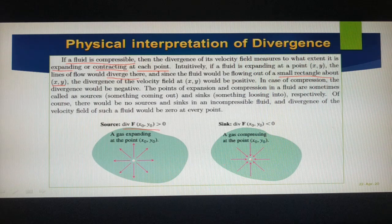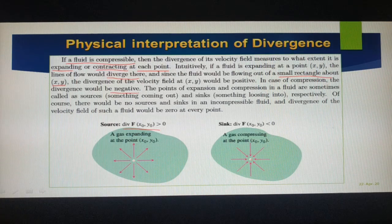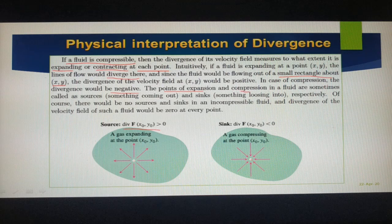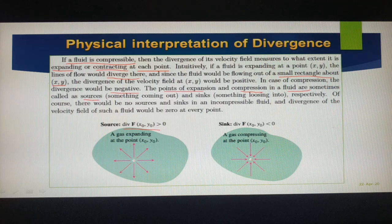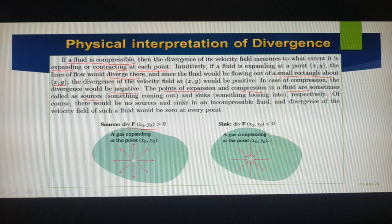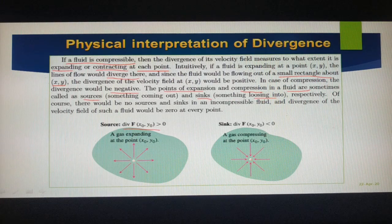When the fluid is compressing, the divergence would be negative. The point of expansion in a fluid we call a source — fluid is coming out and expanding. When it is compressing, we call it a sink — fluid is losing into it.